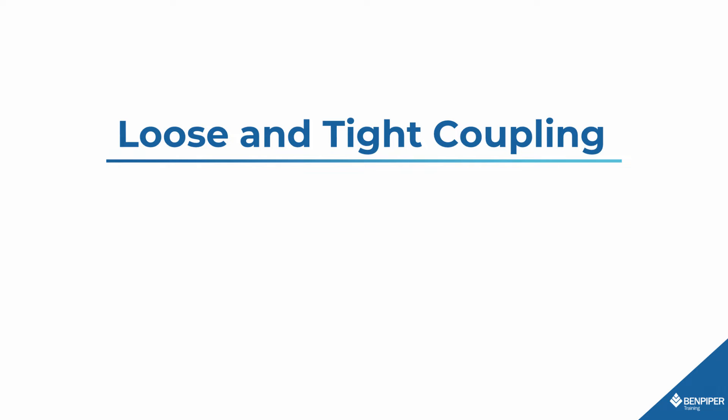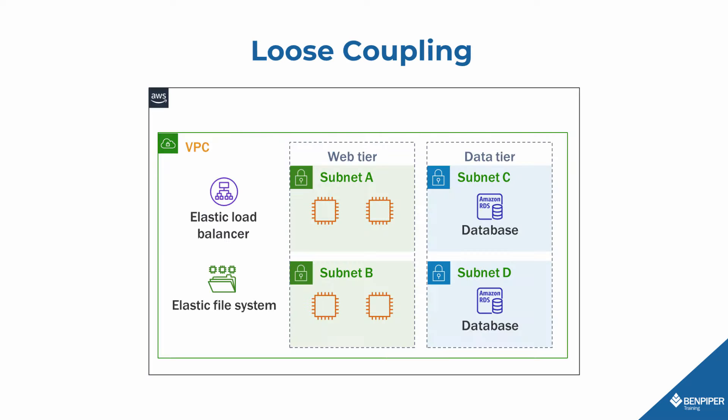Two terms you'll come across during your AWS studies, if you haven't already, are loose coupling and tight coupling. Loose coupling is a design principle that we use all the time, and most of the time we don't even realize it.